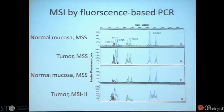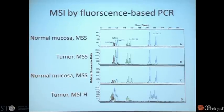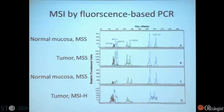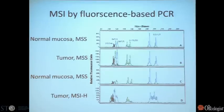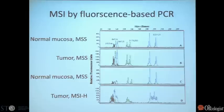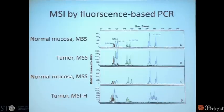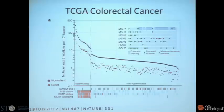The other way to look at this is by fluorescence PCR. Here you see normal mucosa with five markers, and in a microsatellite stable tumor it looks no different. In an MSI high tumor, you see that these markers are basically repeated in between. So when we order a DNA-based microsatellite instability test, that's what it would look like.